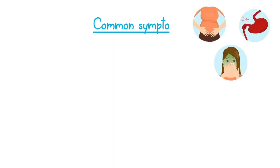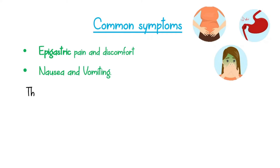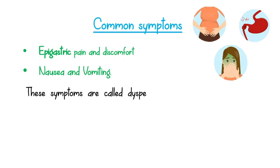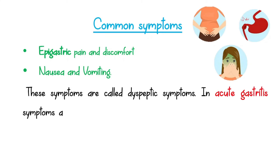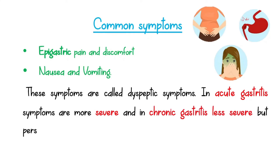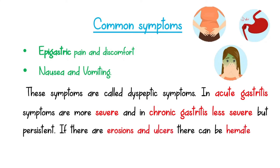Common symptoms due to gastritis include epigastric pain and discomfort, nausea, and vomiting. These symptoms are called dyspeptic symptoms. In acute gastritis, symptoms are more severe, and in chronic gastritis they are less severe but persistent. If there are erosions and ulcers, there can be hematemesis and melena.